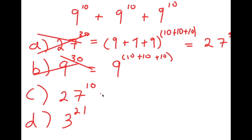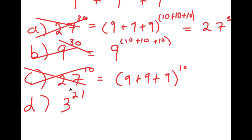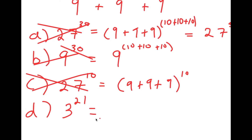Option C, 27 to the power of 10, was arrived at by adding the bases but keeping the exponent the same. This is also wrong — that's not how you add exponents. So by process of elimination, D, 3 to the power of 21, is the right answer. Let's see how to arrive at that.